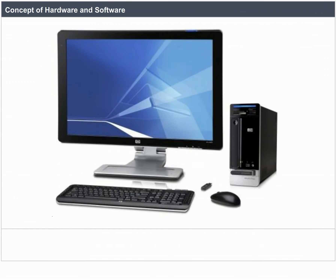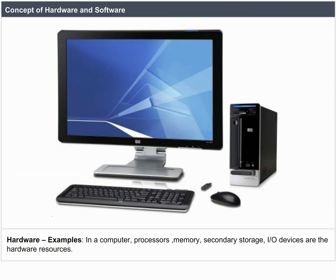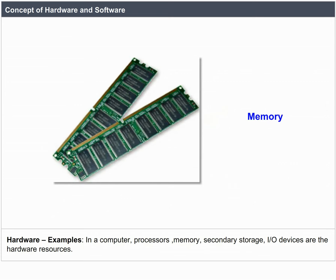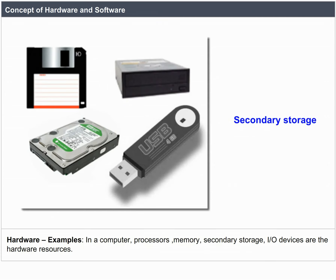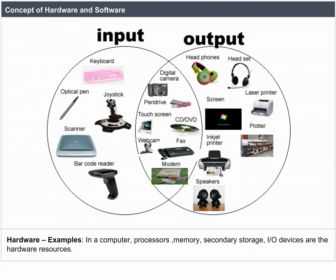Concept of Hardware and Software. Hardware includes all the physical components that together form a system. Software includes the set of instructions and data that instruct the computer on what to do and how to do it. In a computer, the processor, memory, secondary storage, and I/O devices are the hardware components.